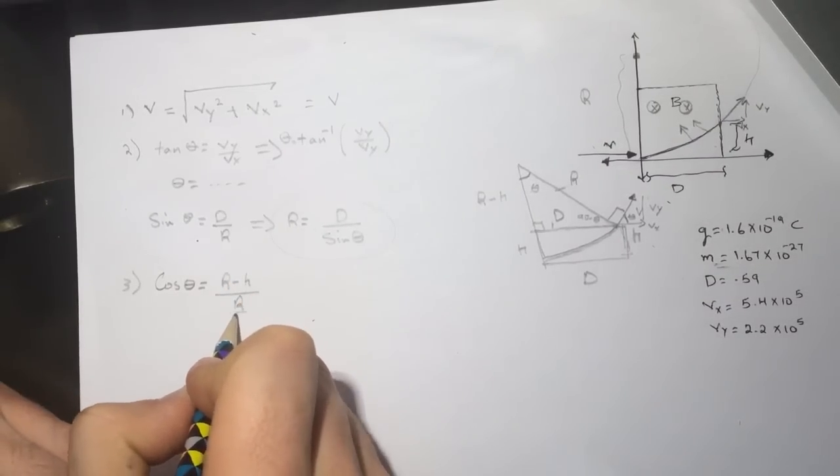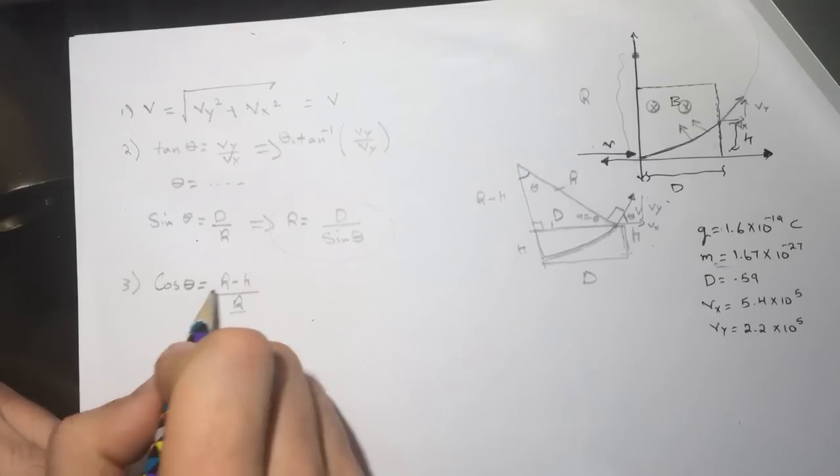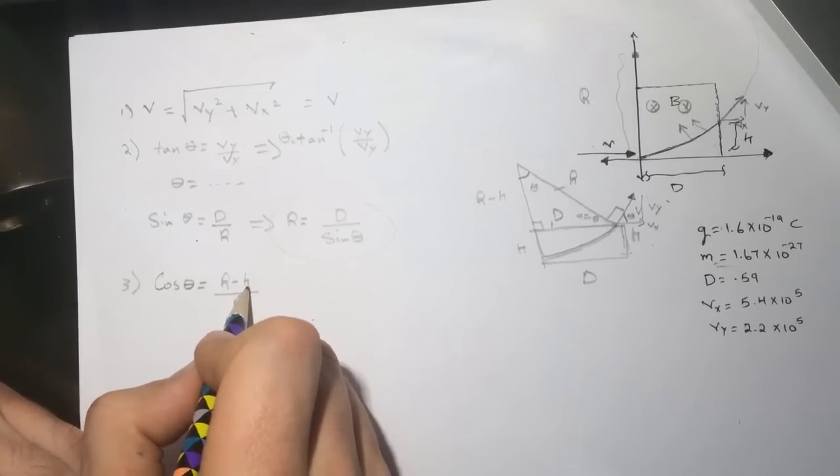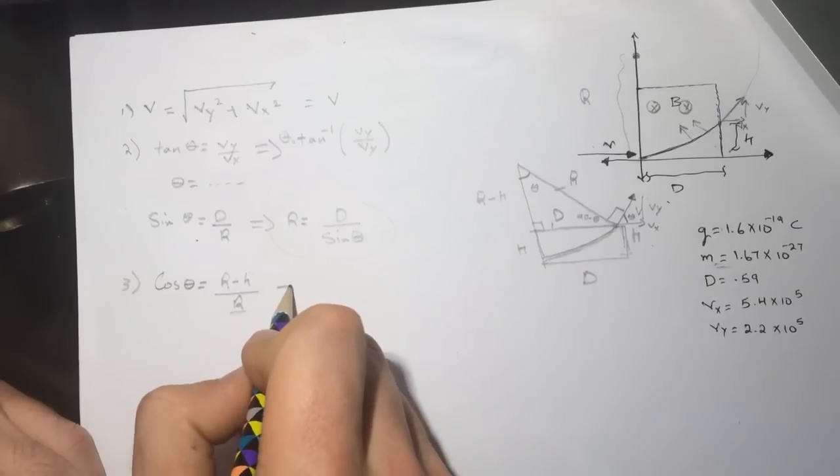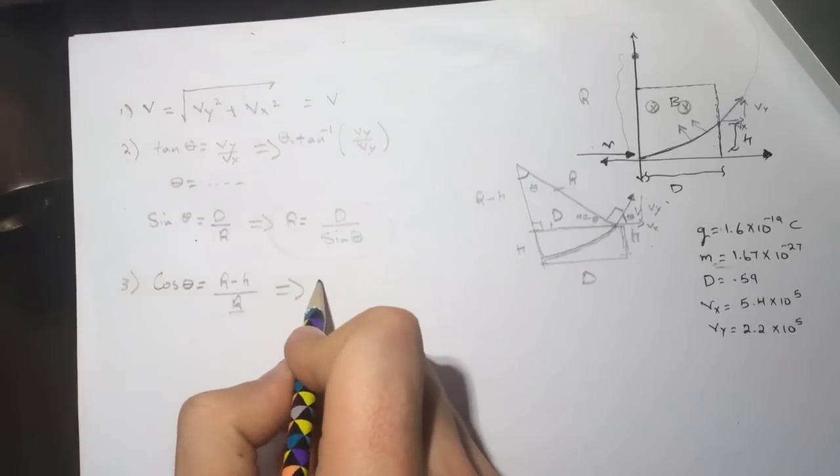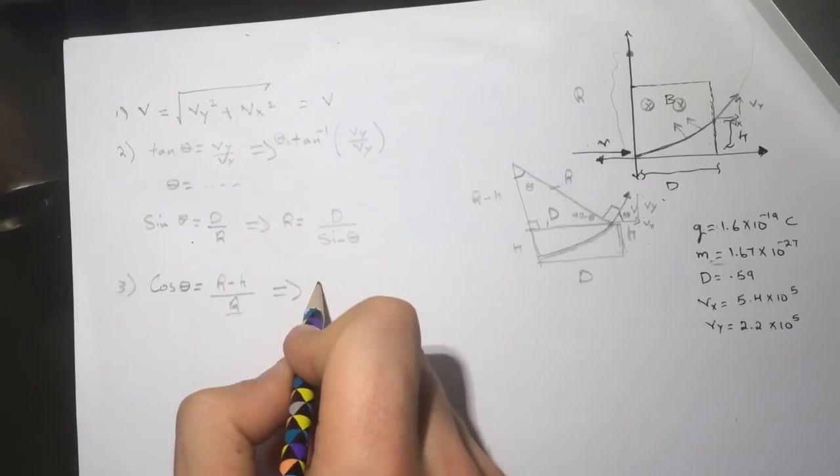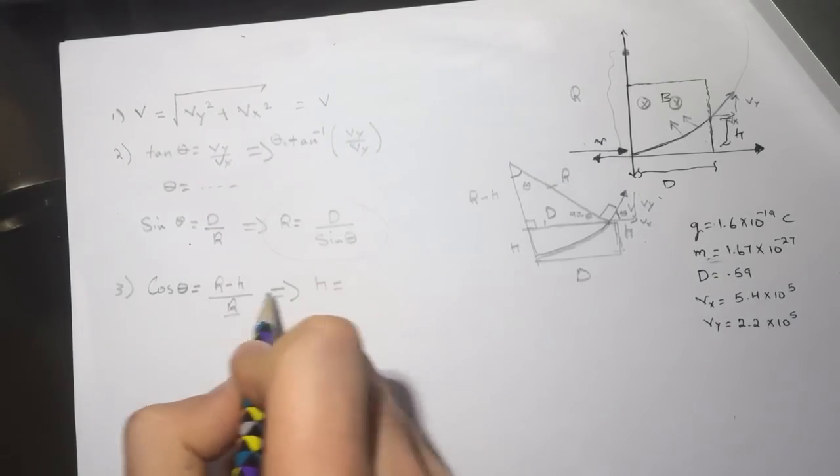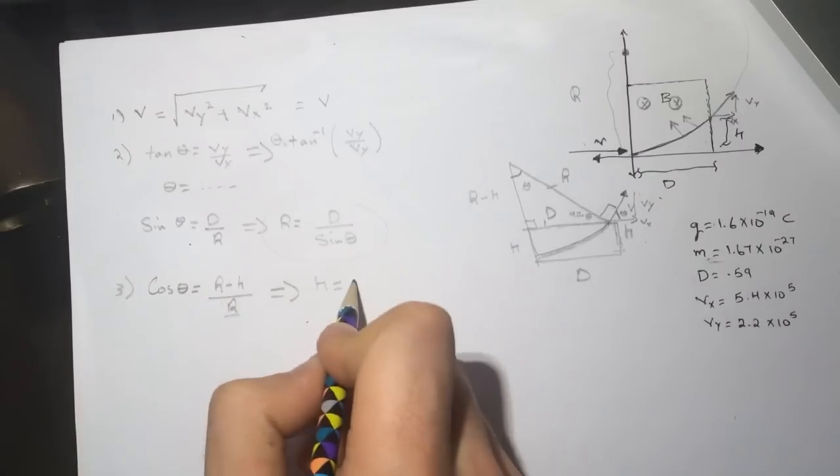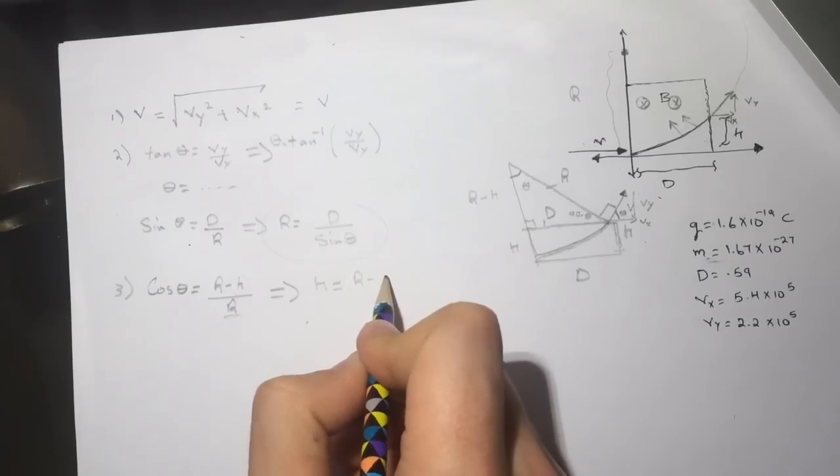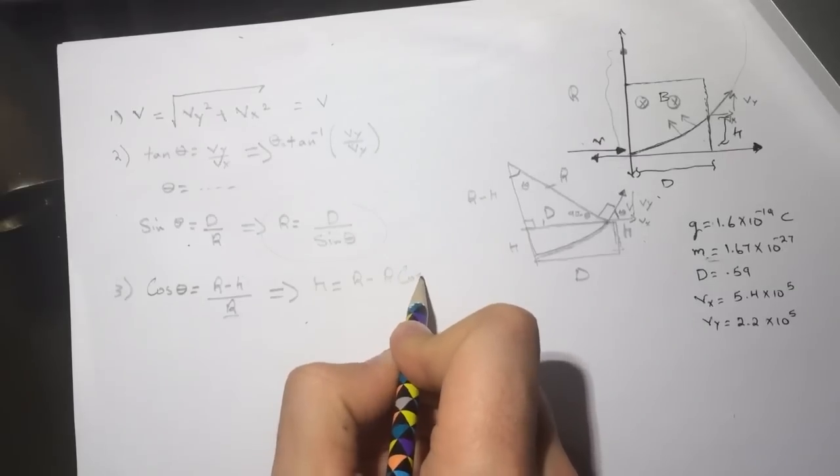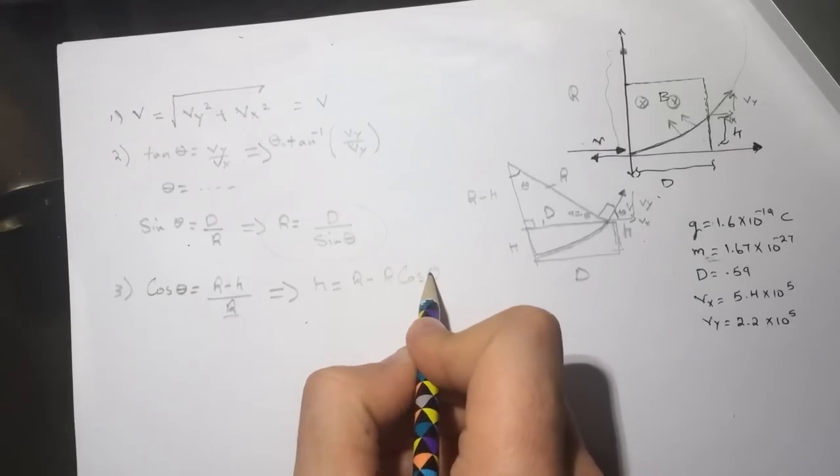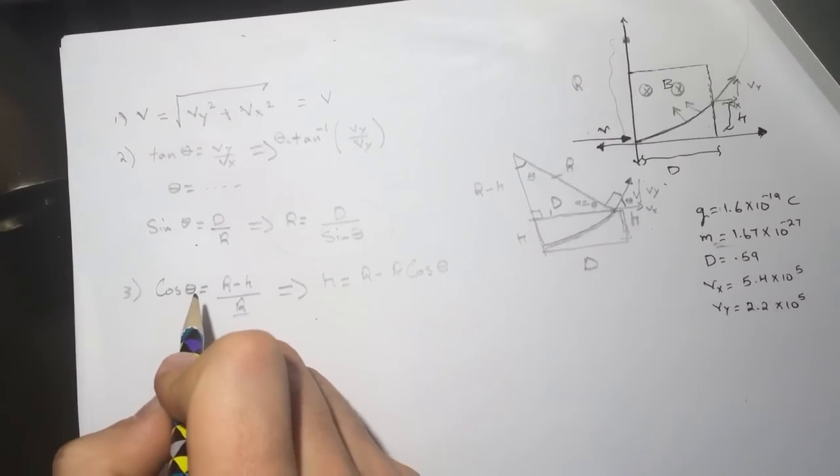And since we have R, the only variable that is unknown is the H. So putting everything together you will get H is equal to R minus R cosine of theta.